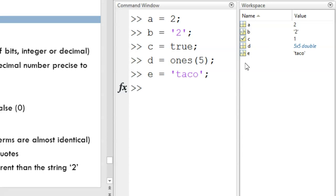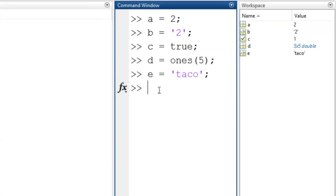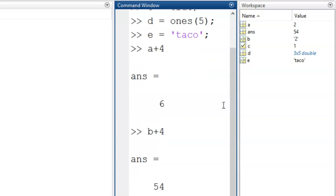Now to demonstrate the difference between numeric 2 and character 2. First, I'll enter a plus 4, which gives me the expected result of 6. Now I'll enter b plus 4. This gives a surprising answer of 54.